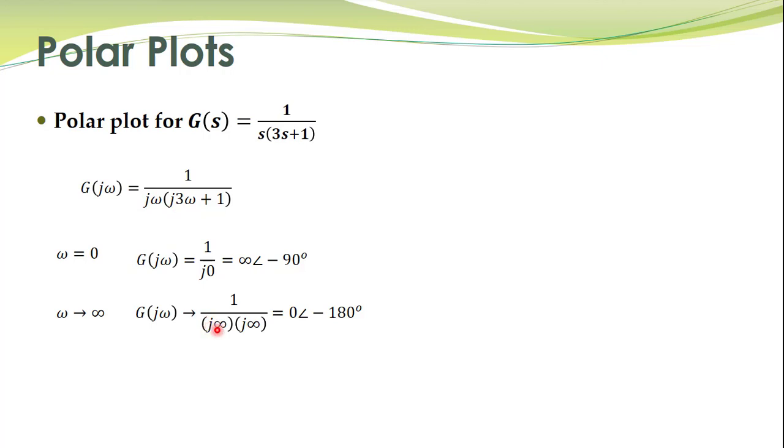So it becomes j infinity and j infinity. What is 1 over infinity? Magnitude of this complex number is 0 and phase angle is minus 180 degrees.